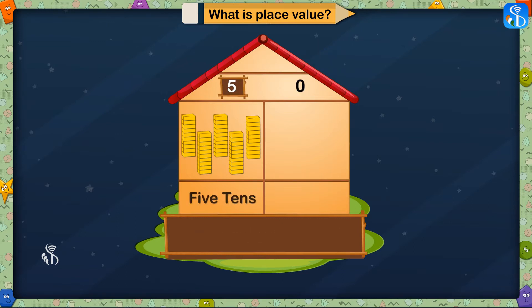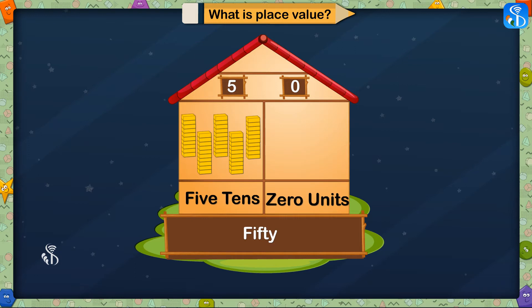Therefore, 5 tens and 0 units together will make 50. Now let us look at some more examples.